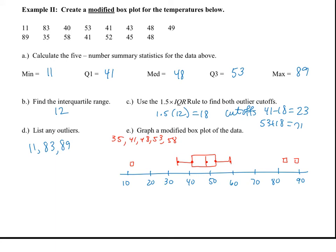As we can see here, I have my 5-number summary listed. We find our IQR to be 12, and using the 1.5 times IQR rule, our outlier cutoffs are 18 units below the Q1 and 18 units above the Q3. Based on these limits of 23 and 71, 11, 83, and 89 are considered outliers. So when I graph my modified box plot, notice that the Q1, median, and Q3 have not changed. Only the min and the max have been adjusted using these new cutoff values.